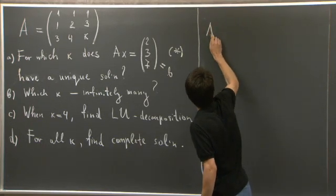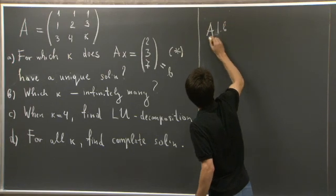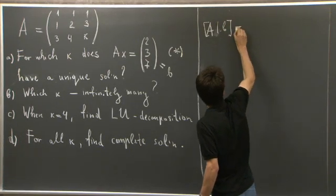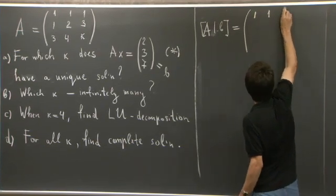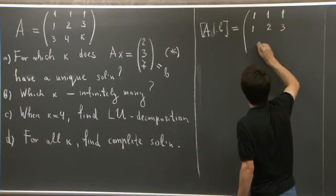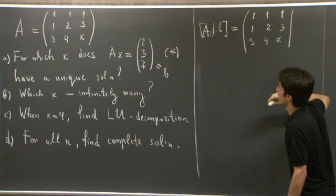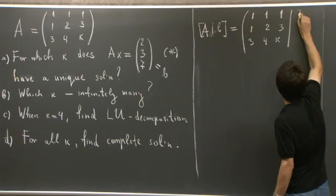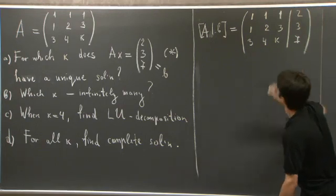I'm going to write this. Well, the augmented matrix is the following: one, one, one; one, two, three; three, four, k; and then two, three, seven.